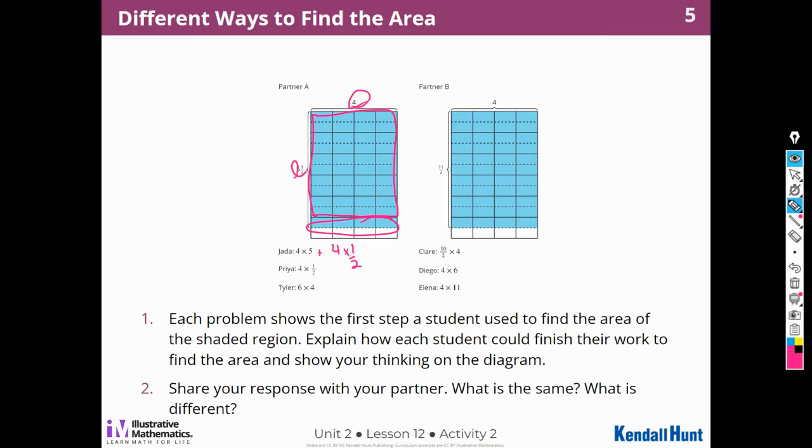So that's how I would finish it for Jada. Let's look at Priya. Priya said her first step was 4 times 1 half. So Priya said 4 times 1 half, so that means she needs to add 4 times 5. Because we're going to have to multiply 4 times 5 and 4 times 1 half.